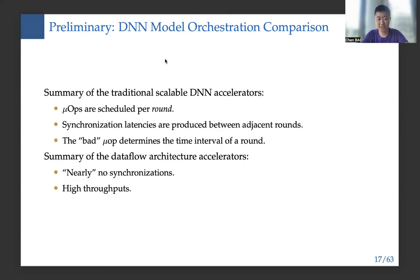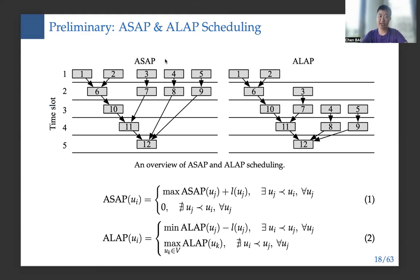To draw some conclusions: for traditional scalable DNN accelerators, μOPs are scheduled per round, synchronization latencies are produced between adjacent rounds, and the slowest μOP determines the round interval. For dataflow architecture accelerators, there are nearly no synchronizations and we have high μOP throughputs. The figure also demonstrates two scheduling strategies we call as-soon-as-possible (ASAP) and as-late-as-possible (ALAP): ASAP schedules μOPs as soon as possible by following equation 1, and ALAP schedules μOPs as late as possible following equation 2.